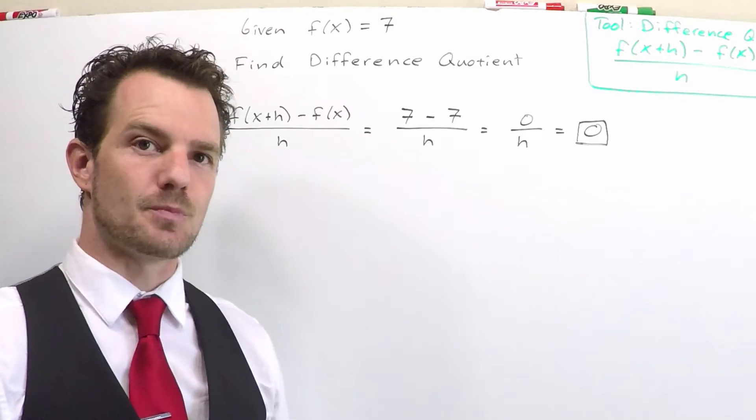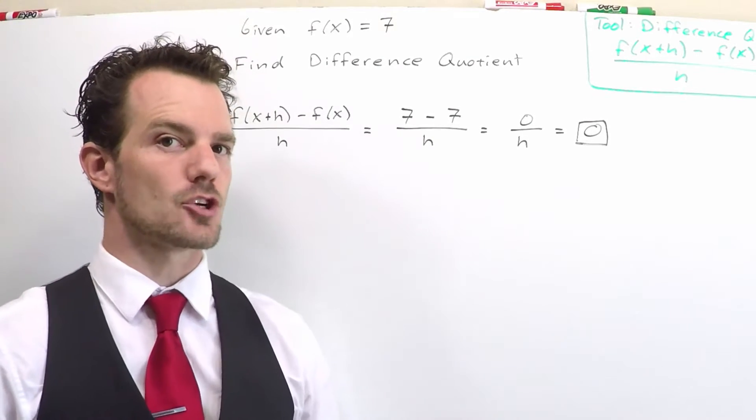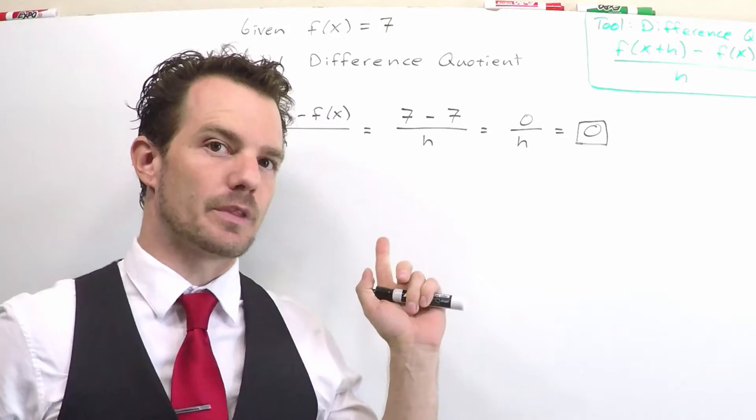What happens in this problem typically is that people have been working the difference quotient so much that they forgot how to handle it when you've got a constant.